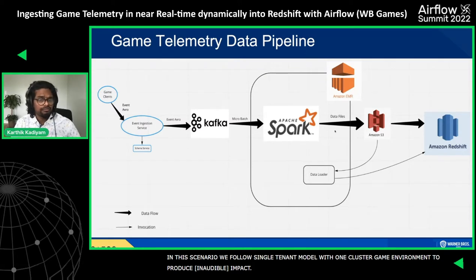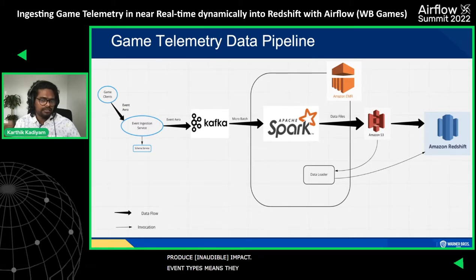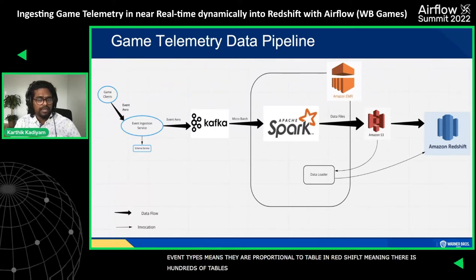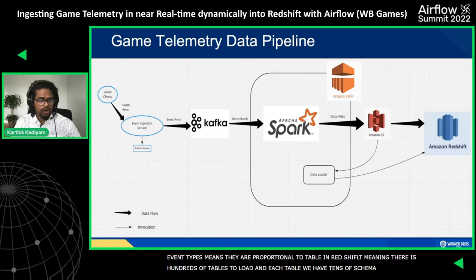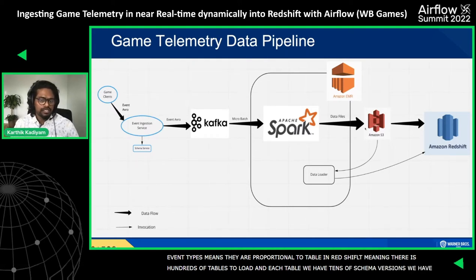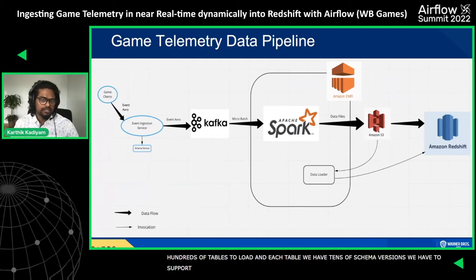We have N number of games, and for each game we have hundreds of event types — each event maps to a table in Redshift — meaning hundreds of tables to load, each with tens of schema versions to support. All these dimensions are processed and saved in S3 in a specific S3 file path format.